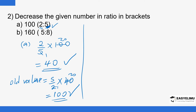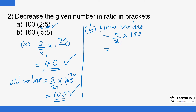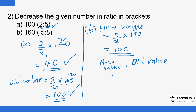For question (b): we have 160 and we want to decrease it in the ratio 5 to 8. New value equals 5 divided by 8, multiplied by 160. 8 goes into 160 twenty times, and 20 multiplied by 5 is 100. So decreasing 160 in the ratio 5 to 8 gives 100. To find the ratio from new and old values: 100 to 160. Dividing both by 10 gives 10 to 16, then dividing by 2 gives 5 to 8.